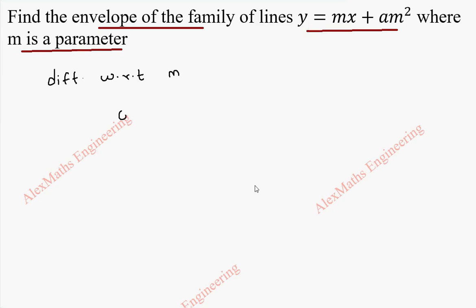So the differentiation of y is 0, and the differentiation of m is 1, and the constant x is written as it is, and a is a constant written as it is, and the differentiation of m square is 2m.